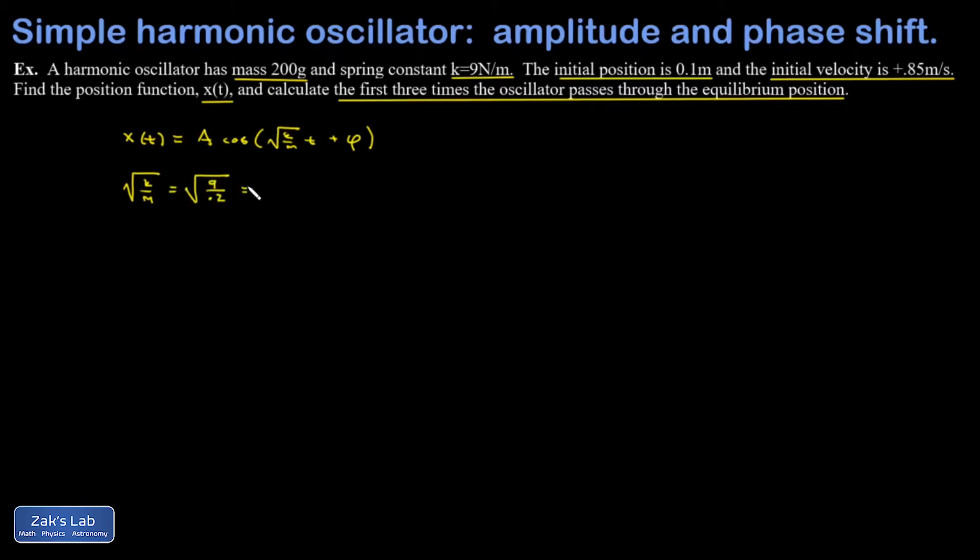So my position function could be written down as A cosine 6.71t plus φ. Now let's apply our initial conditions.